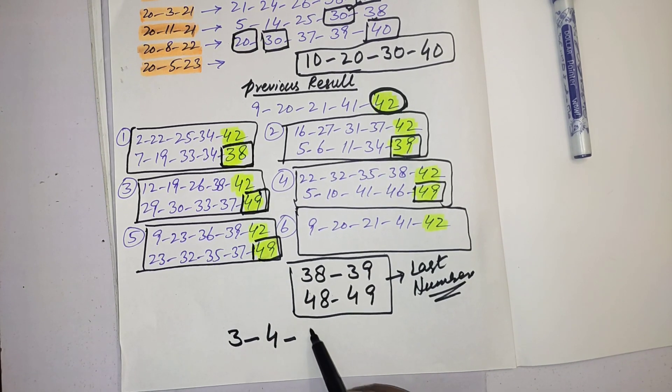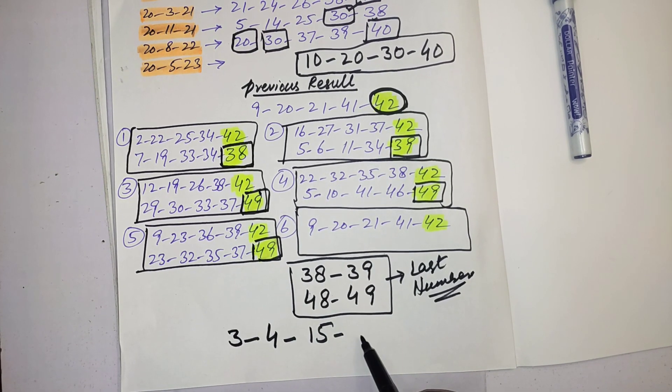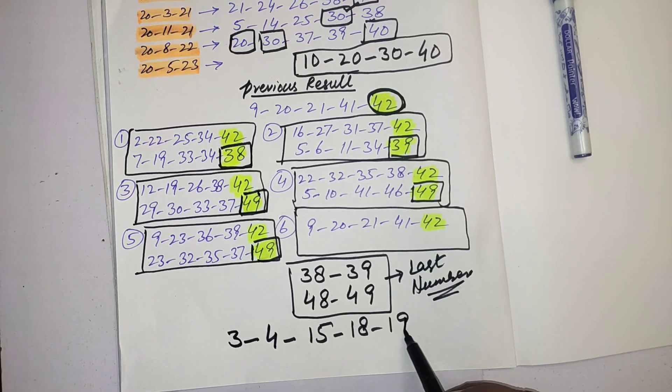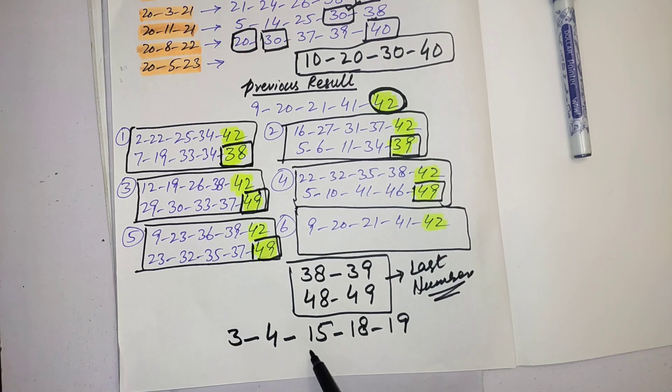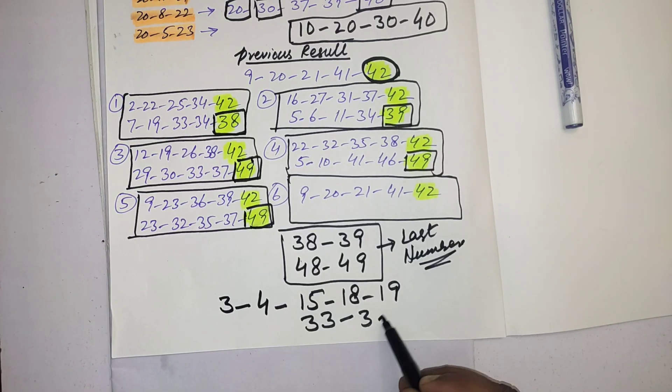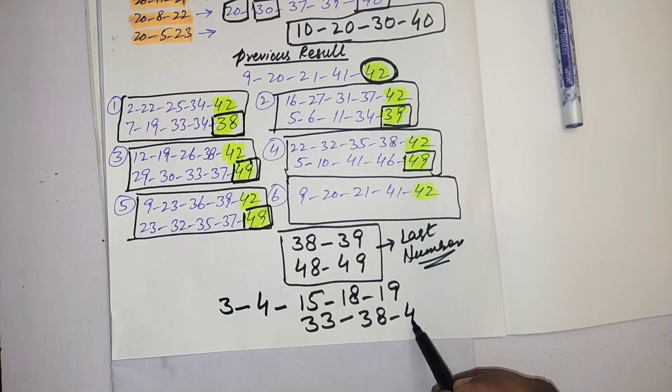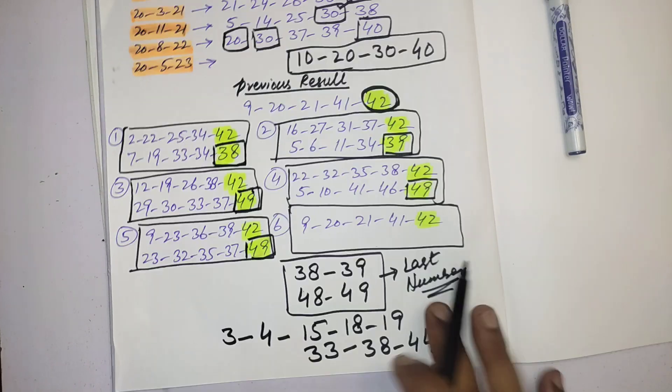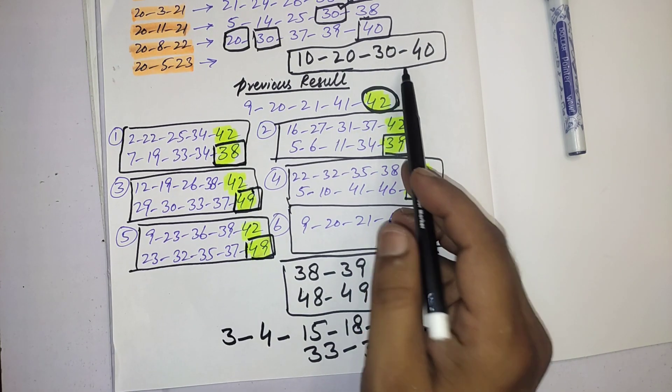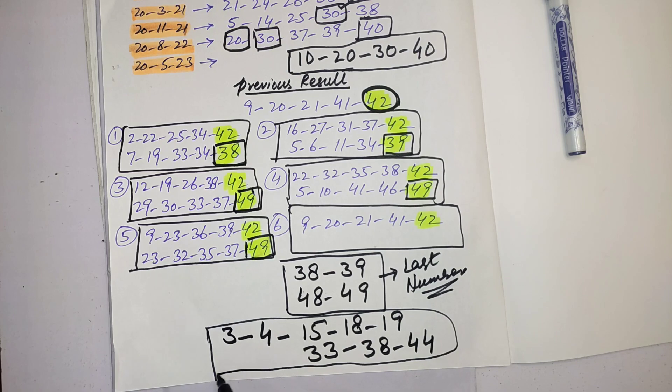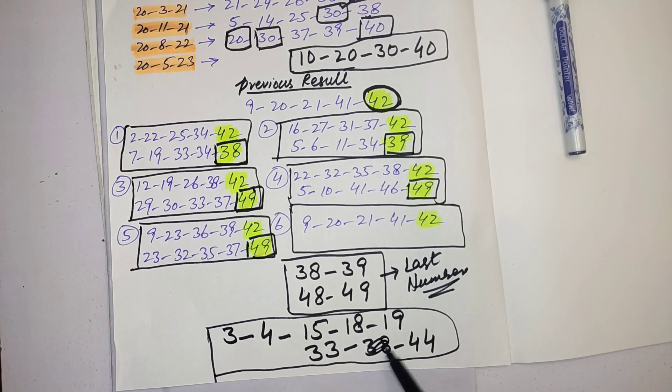You should select one number from here, one or two numbers from here, one or two numbers from here, and remaining numbers from these numbers.